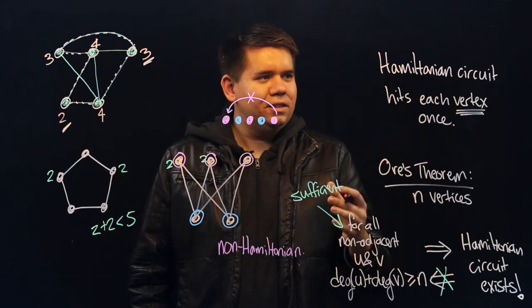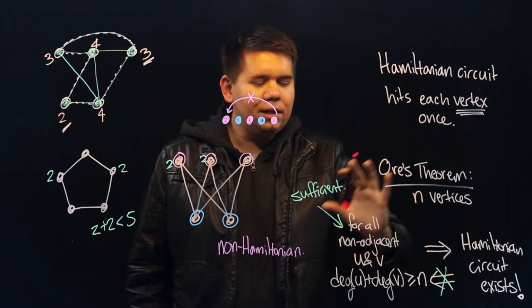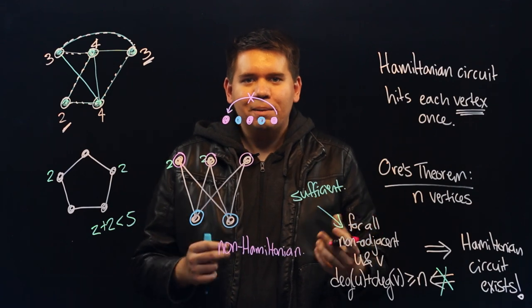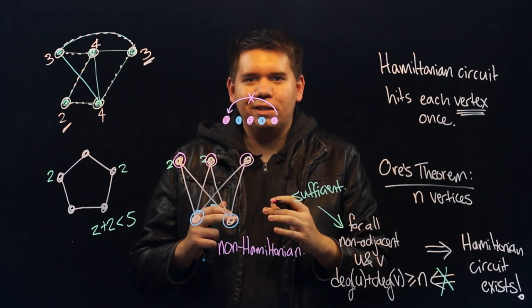You might feel that seeing if there's a Hamiltonian circuit or not is a bit like a puzzle. There are some conditions that can help us. But in general, there's not an easy if-and-only-if test. So sometimes you have to play around and figure out if there's a Hamiltonian circuit or not.